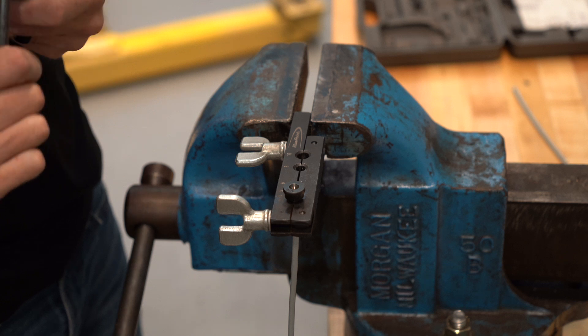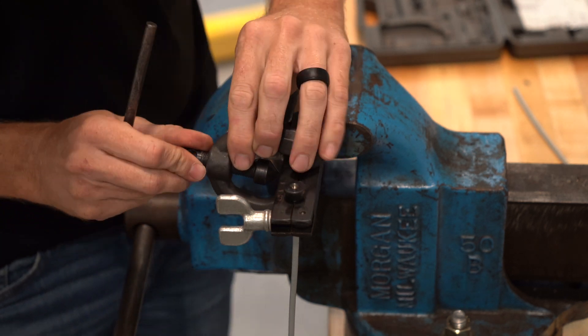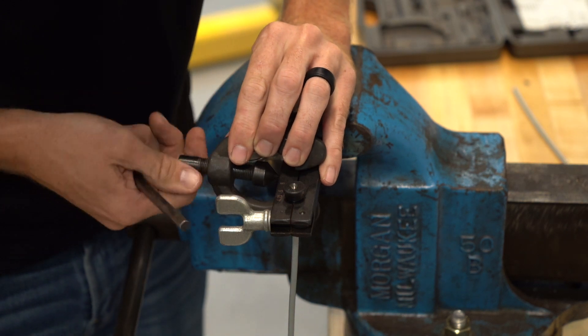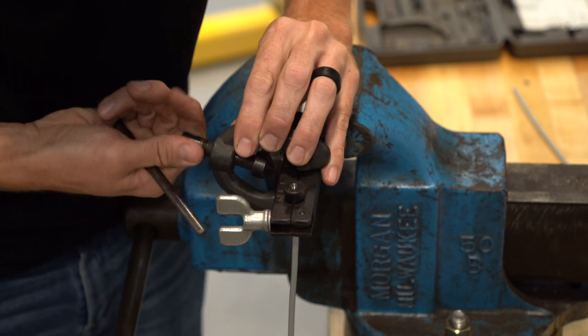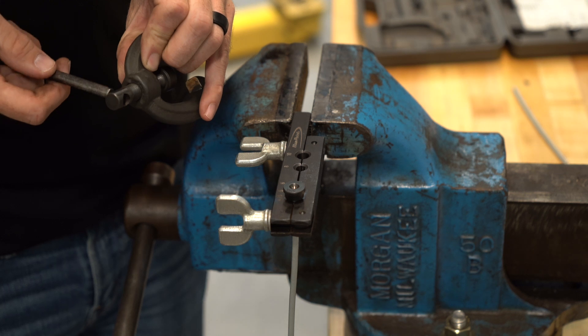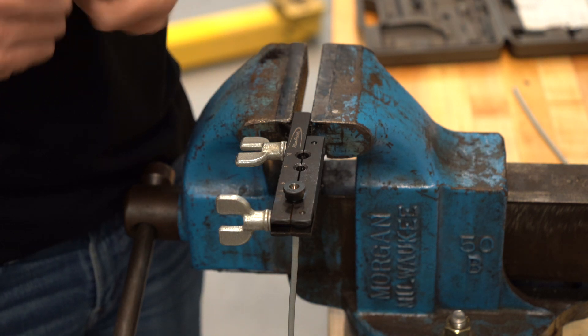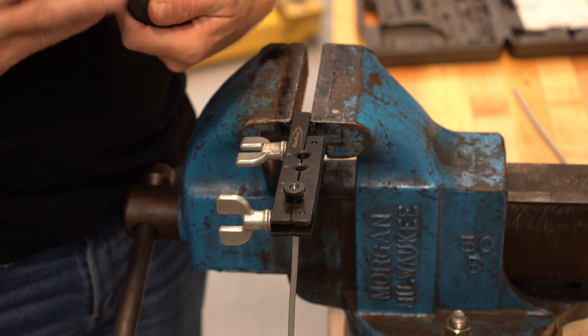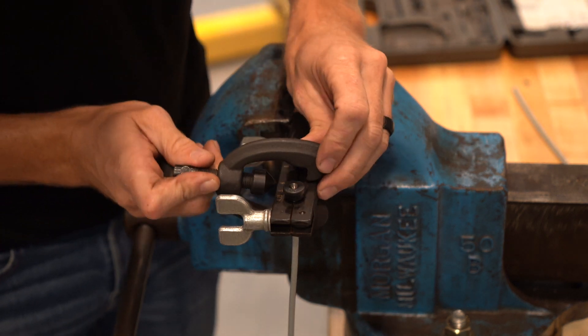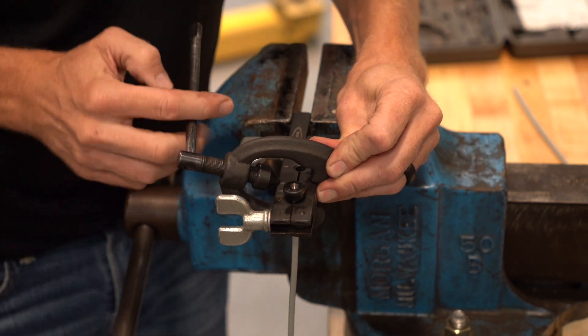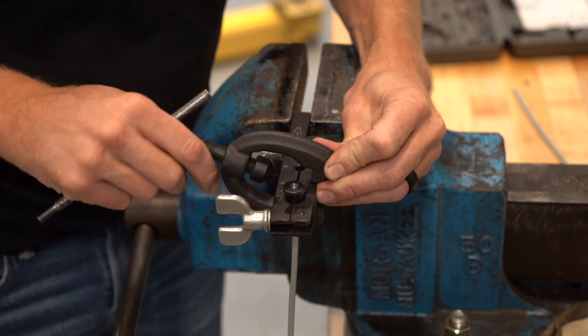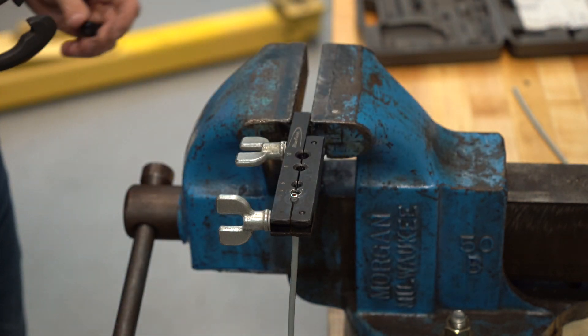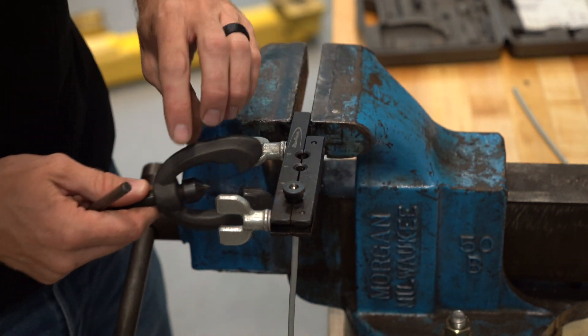Then we're going to take the other part of the tool and slide this over it. Make sure this is loose enough. So there's our forming die down in the tool, and we're going to slide this part of the tool over.